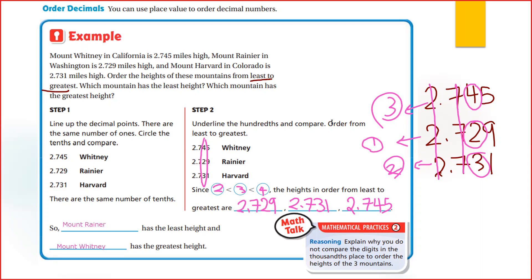To order, you write them under each other and then compare. If they are equal, go to the next digit. If they are equal again, go to the third digit. Here we have 4, 2, and 3 — they are all different. Which is the least? 2. So the one with 2 will be the first.